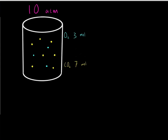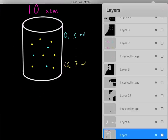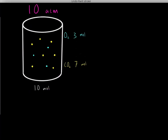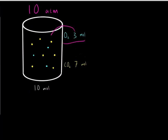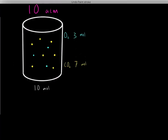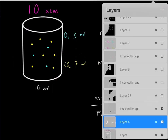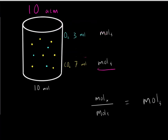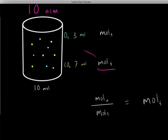To understand this, we first need to determine the total amount of moles in this gas. We have 3 moles of oxygen and 7 moles of carbon dioxide, giving us a total of 10 moles. The next step is to find the mole fraction of oxygen and the mole fraction of carbon dioxide in this gas.